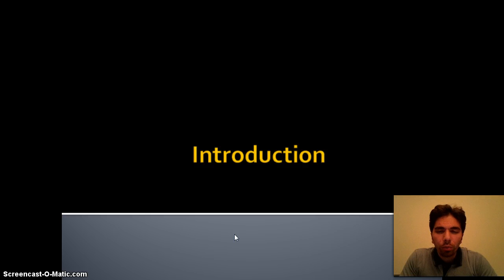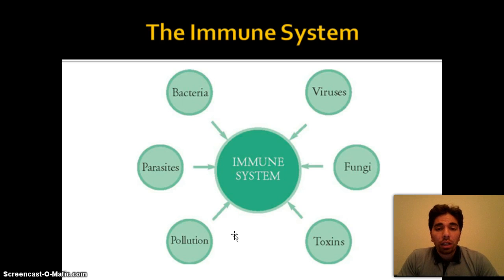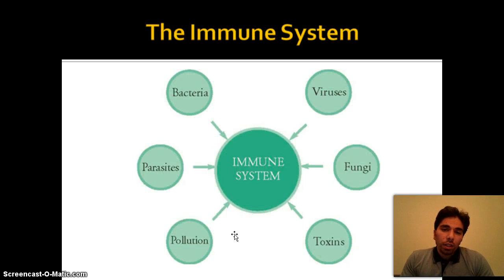Most of you know about the immune system — it's the system that protects the body against foreign invaders like bacteria, viruses, and parasites, and protects us from getting diseases or problems from these invaders. It's a very important system and we cannot survive without it.